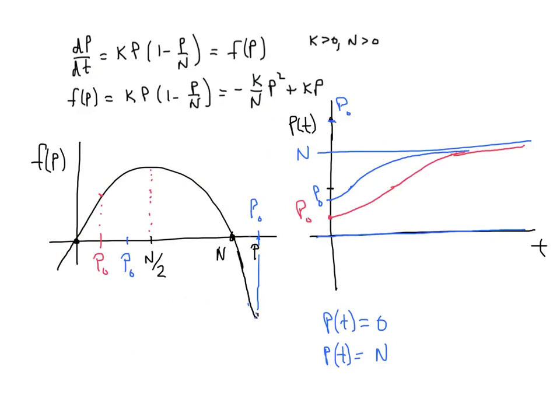If f(P) is negative, if this side is negative, then my slopes are negative. And I see, if I were to draw it, my slopes are decreasing, approaching the carrying capacity.